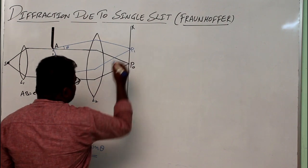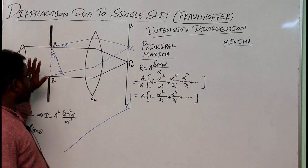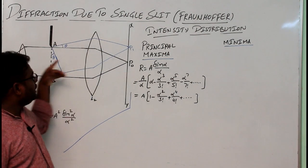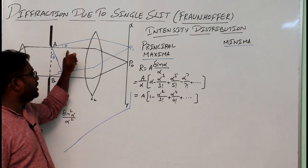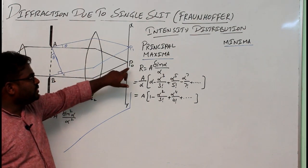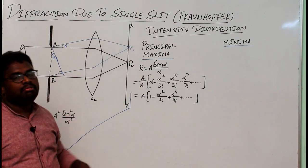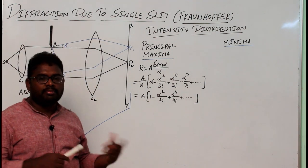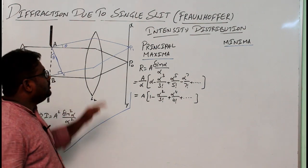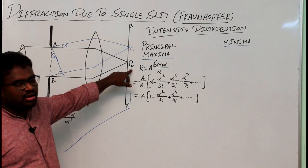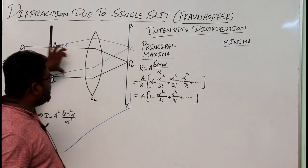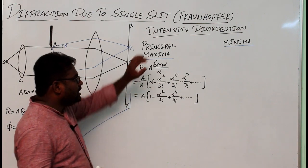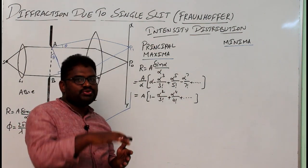We have to calculate whether point P1 is bright or dark. Light rays incident on a single slit of size e: those traveling without deviation focus at P0, and those diffracting with angle θ focus at P1. We need to determine whether P0 and P1 give maximum or minimum intensity — bright or dark fringes — since two light rays are superimposing. First, take the central one, which we call the principal maxima, because the light rays travel without deviation and focus at the center of the screen.